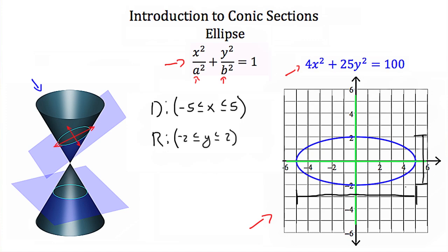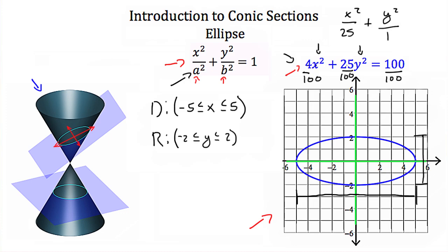Now the equation given for this example ellipse — 4x squared plus 25y squared is equal to 100 — is not written in standard form. But we can still tell that this is an ellipse because both x and y are squared, which means this has to be either a circle, an ellipse, or a hyperbola. But because the coefficients are different in front of our x and y terms, yet both the same sign, I can tell this is an ellipse. Another way to identify this is to divide everything by 100, giving us x squared over 25 plus y squared over 4 equals 1.